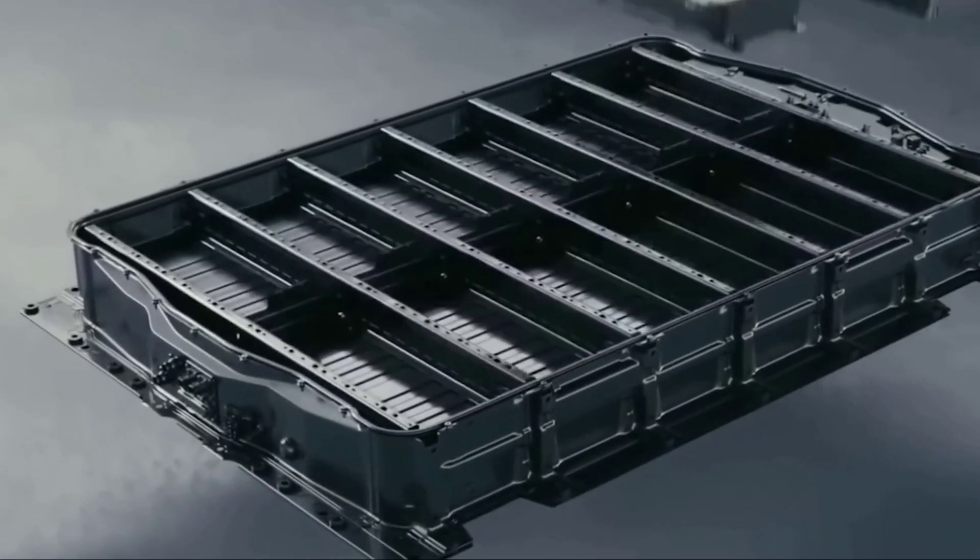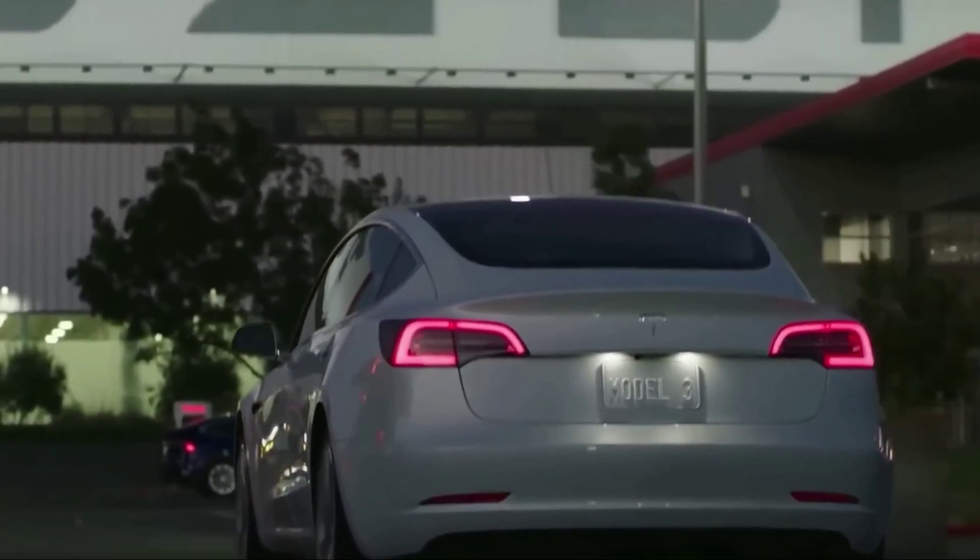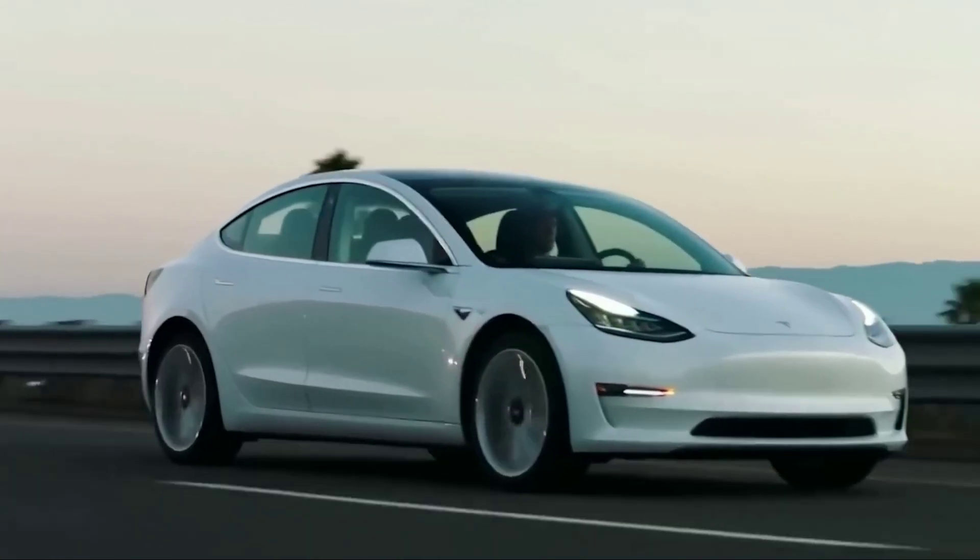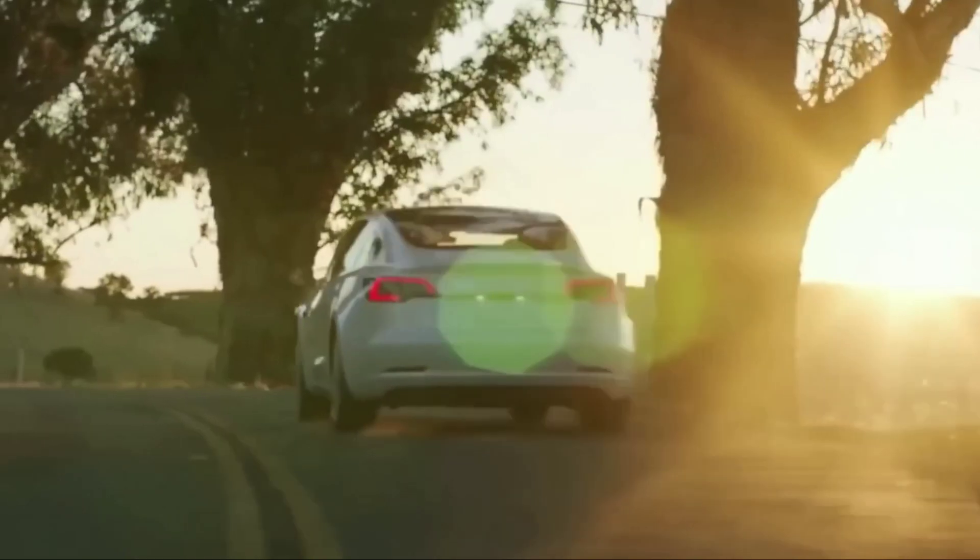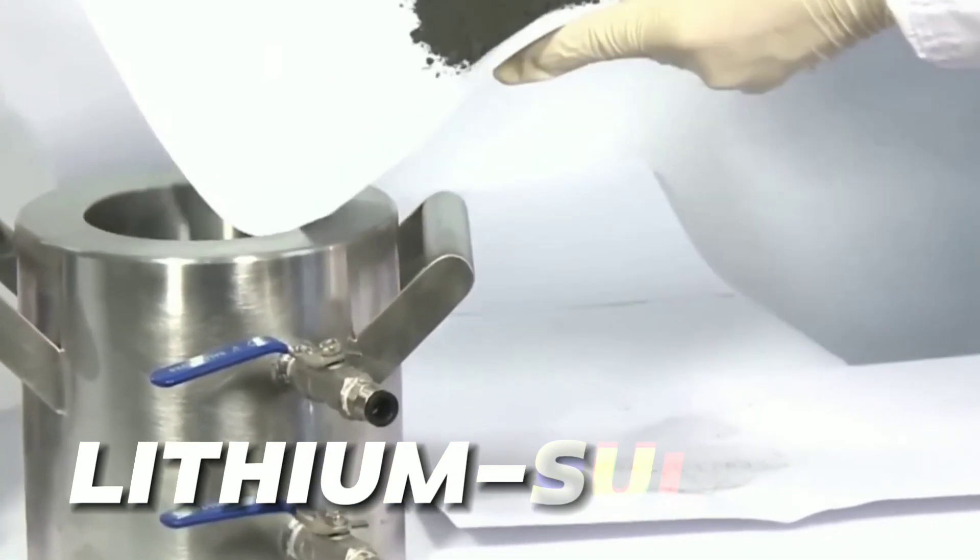So, how can we solve these problems? How can we make EV batteries cheaper, lighter, safer, greener, and more powerful? Well, one possible solution is to use a different type of battery chemistry. Lithium-sulfur.